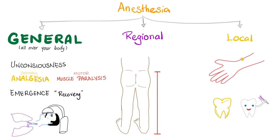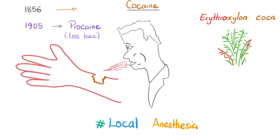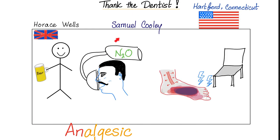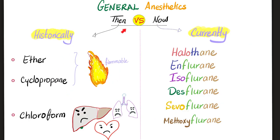Which anesthetic is the best? There is no such thing, because there are no solutions in life — there are only incremental trade-offs. Every medication has pros and cons. Anesthesiology has a great history. Doctors used to spit cocaine in your wound to make you numb before the procedure. Nitrous oxide has a great story. Chloroform was used on the Queen of England during labor. In the old days we used ether, cyclopropane, and chloroform.